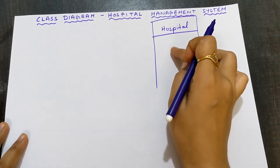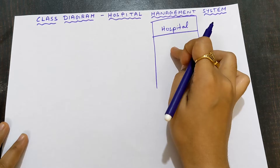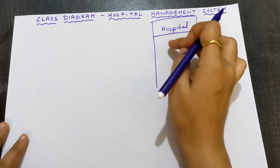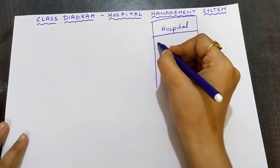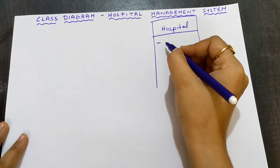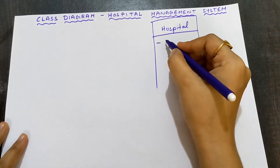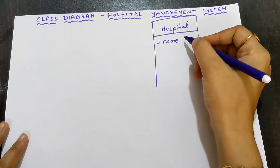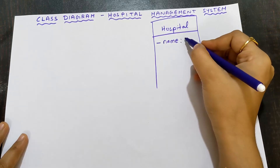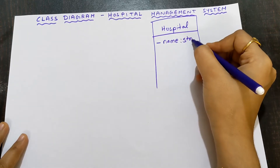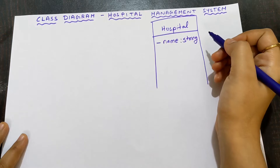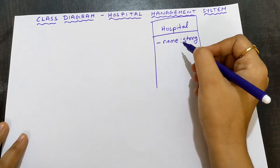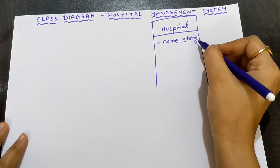In the second box, I write the attributes — the characteristics of the object hospital. I put a sign, then write the attributes. Hospital will have a name, so name is an attribute. After the attribute name, put a colon and write its data type: string. String is nothing but alphabets or characters, and names consist of letters and alphabets, so the data type is string.